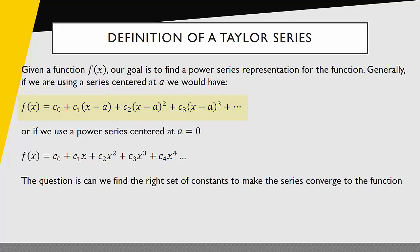And if we use a power series centered at zero, we could represent that power series generally like this. So really the big question is can we find the right set of constants so that this series actually converges to the function? How do we find these right constants?